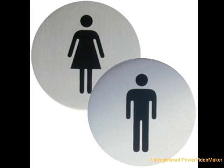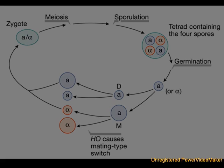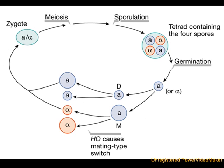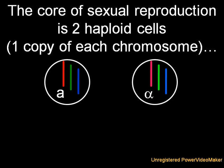So the dawn of sex did not have two complex multicellular organisms going at it with matched genitals, dimorphic gametes, and complex mating rituals. Instead, the dawn of sex was simply the dawn of cells fusing, mixing their DNA, and then separating.